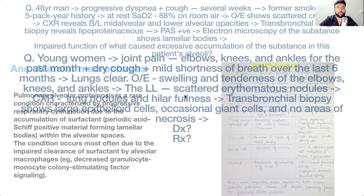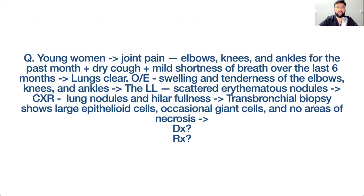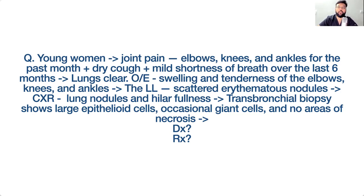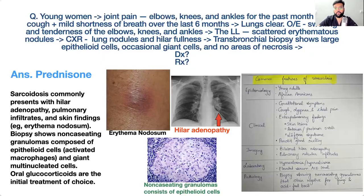What is another type of restrictive lung disease? A young woman with joint pain everywhere, dry cough, shortness of breath, clear lungs on auscultation, swelling and tenderness of elbows, knees, and ankles, scattered erythematous nodules, hilar fullness. Biopsy shows giant cells and epithelioid cells. Diagnosis: sarcoidosis. Treatment: steroids.